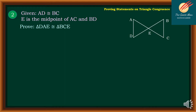Let's move on to the second example. We will use the illustration on the right side. Given: AD is congruent to BC, and E is the midpoint of AC and BD. We would like to prove that triangle DAE is congruent to triangle BCE.